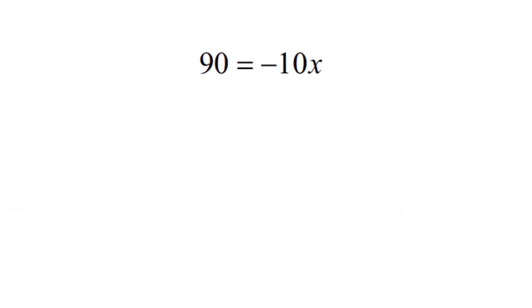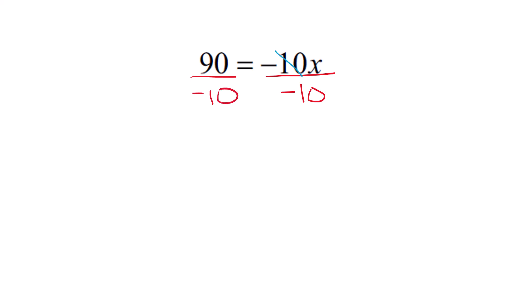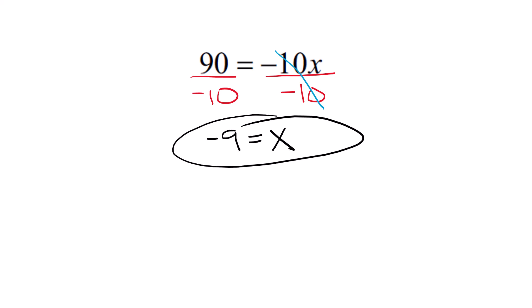90 equals negative 10x. One thing I want to point out here is this negative 10x means negative 10 times x — not negative 10 plus x or negative 10 minus x. If you were going to add or subtract, there would be a plus or minus sign in between. But right now it's multiplication, and we undo multiplication by dividing. So we're going to divide both sides by negative 10. That negative 10 will cancel on the side that has the x, and 90 divided by negative 10 is negative 9, so x equals negative 9.